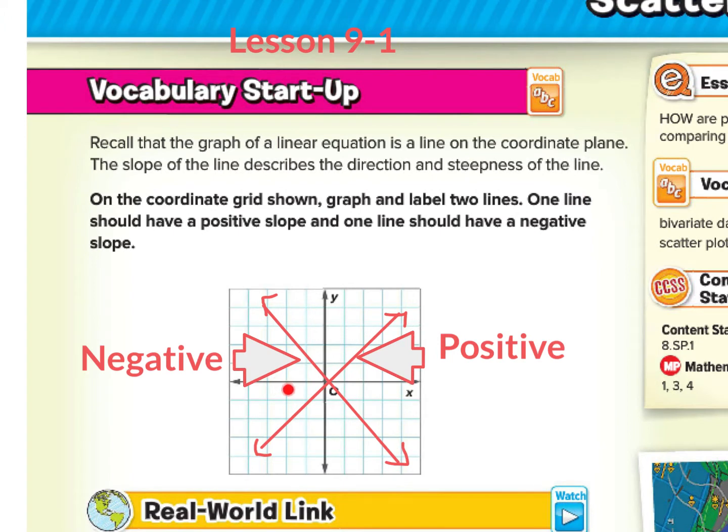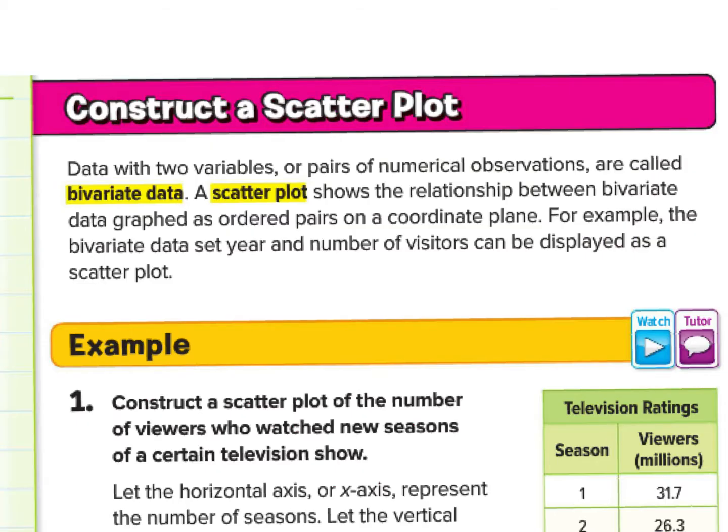In these linear equations, remember that we have an x value and a y value. And the x value is independent, while our y value is dependent on the x. A scatter plot follows a similar rule, but slightly different. The data, or data with two variables, or pairs of numerical observations, are called bivariate data.